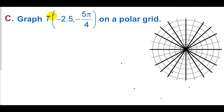For letter C, graph T at (-2.5, -5π/4) on a polar graph. We go to a radius of 2.5 and then go to -5π/4. Going clockwise, that's 4/4 and then 5/4 right there. If it were positive 2.5 we'd plot that point, but since it's negative 2.5, we go in the opposite direction 2.5 units. So that is point T.